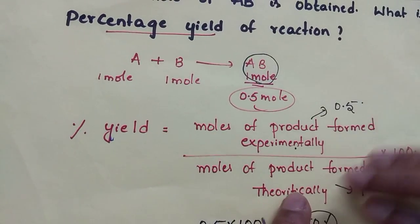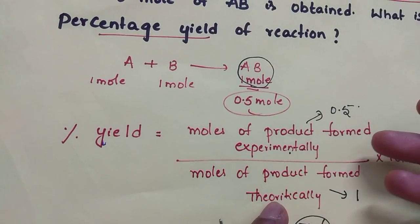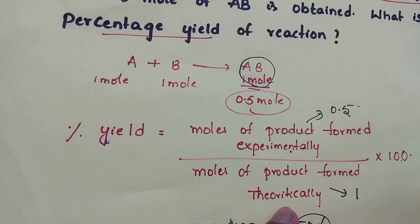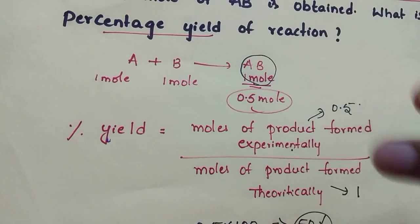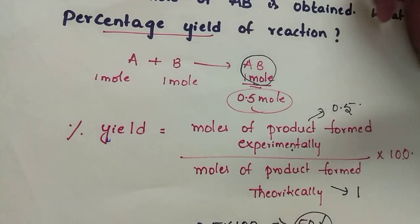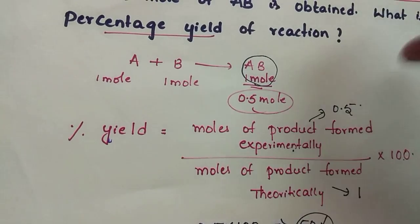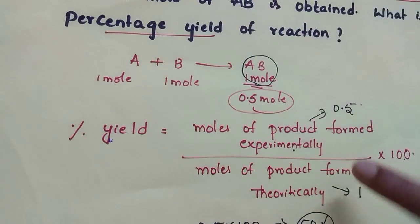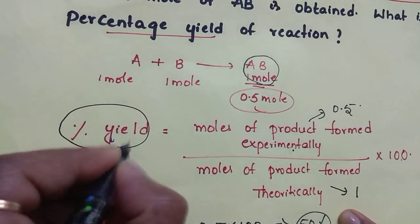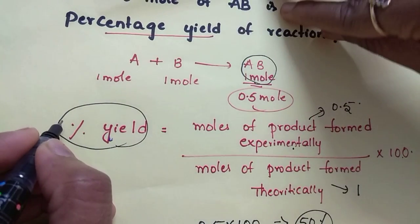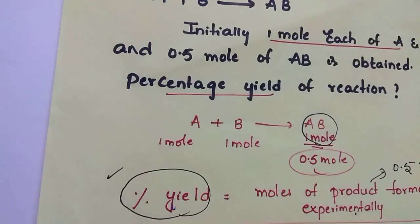Always, whatever product we expect theoretically from a balanced equation will be more than what we get experimentally. The experimental yield is less than the theoretical yield because experimentally we make some mistakes in the lab — maintaining conditions, or side reactions may take place during the main reaction. Because of those reasons, the experimental product is less than the theoretical product.